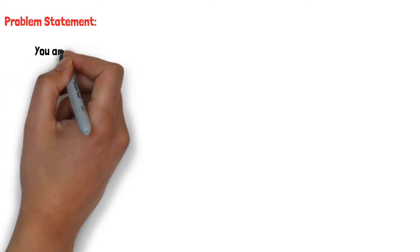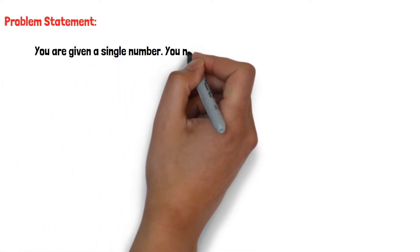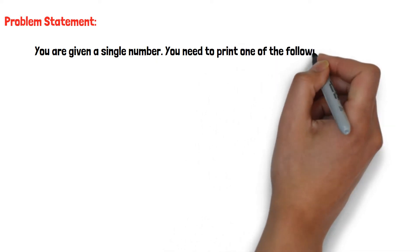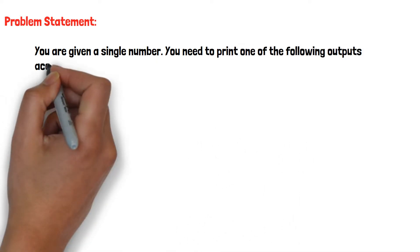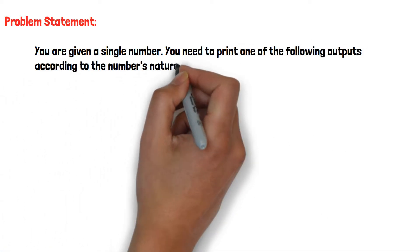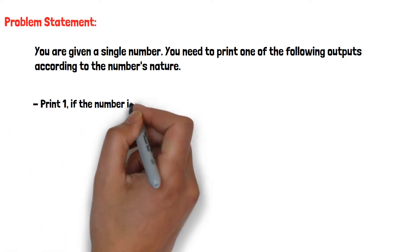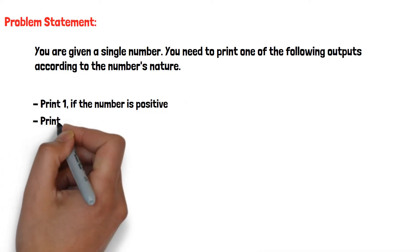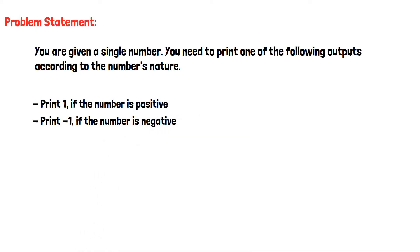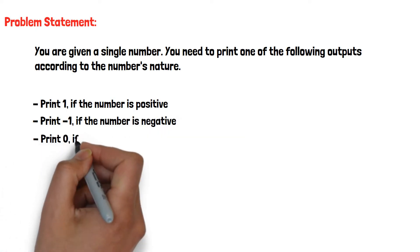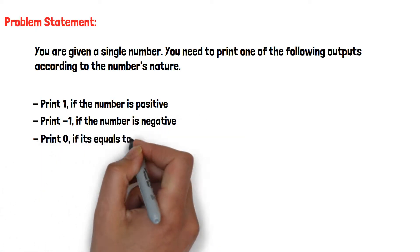In this video, we will construct a flowchart for the following question. You are given a single number and need to print one of the following outputs according to the number's nature: print 1 if the number is positive, print minus 1 if the number is negative, and print 0 if it is equal to 0.